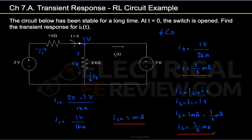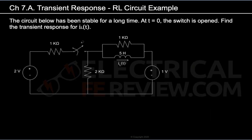The current through the inductor is 0.5 milliamps when time is less than zero — this is very important. When the switch is still closed, IL equals 0.5 milliamps. Now let's see how our circuit looks at time equals infinity, meaning the switch has been opened for a very long time. At time equals infinity, our inductors turn into short circuits once again. Note that at both t less than 0 and t equals infinity — when the system is stable — inductors are short circuits and capacitors are open circuits.